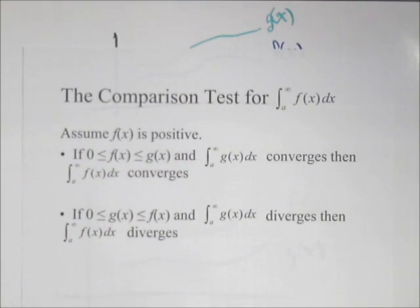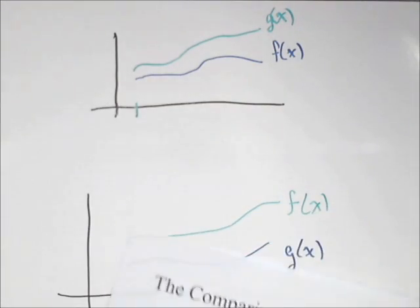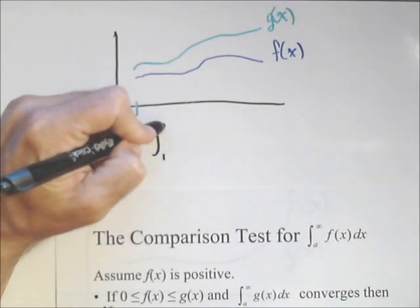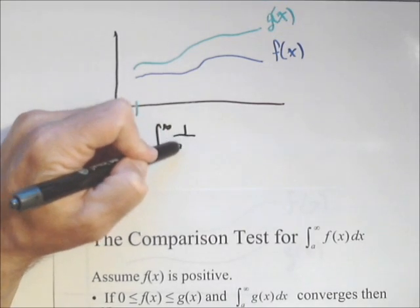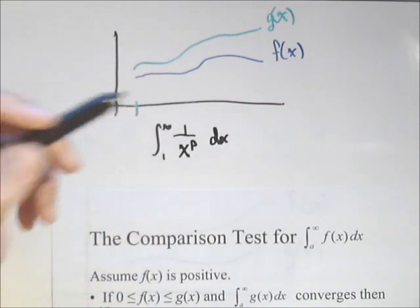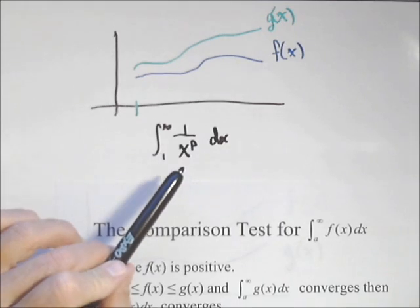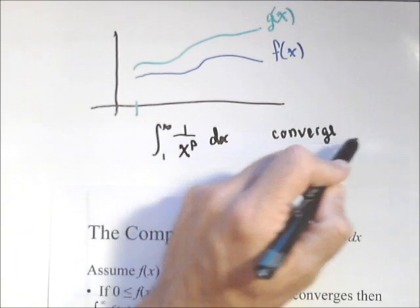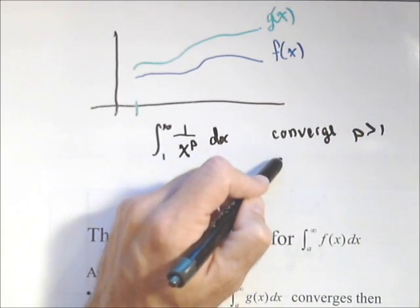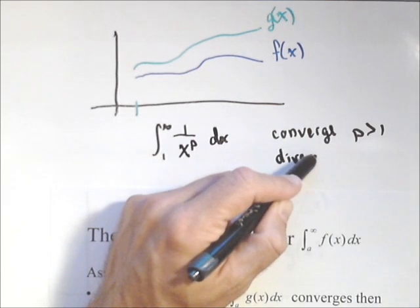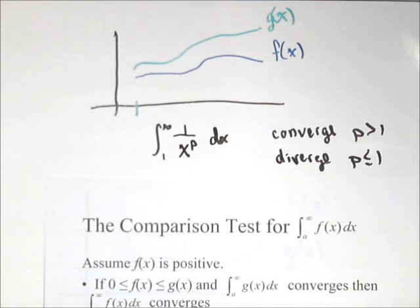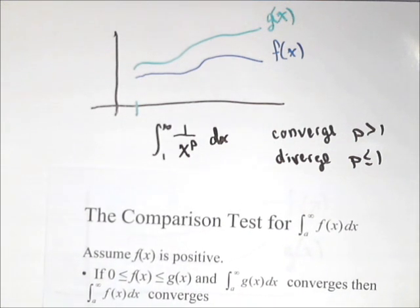Now, there's going to be some basic ones that we know. For instance, whenever we get an integral of the form one to infinity of one over x to the p dx, we know that this is going to converge if p is greater than one, and diverge if p is less than or equal to one. So that's a very common one we use in using the comparison test. It's really easy to test that.